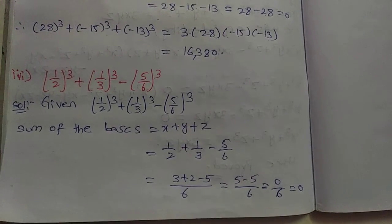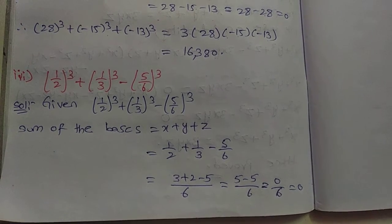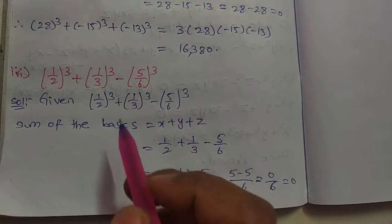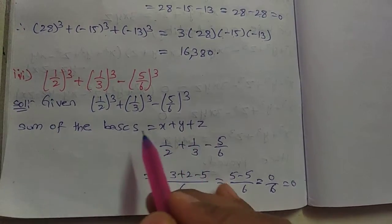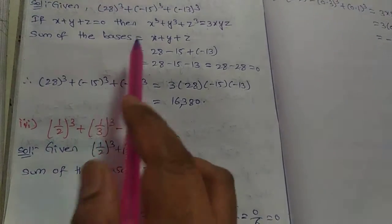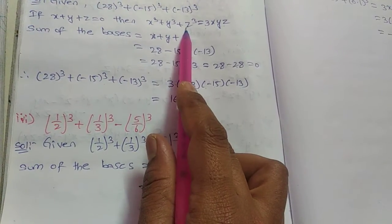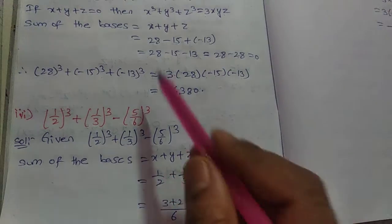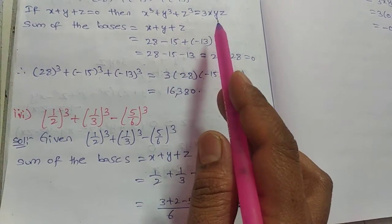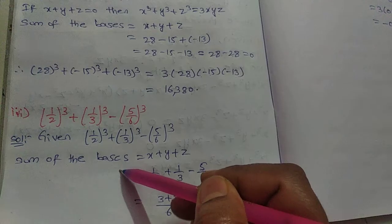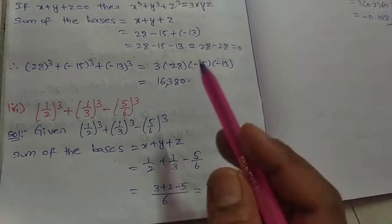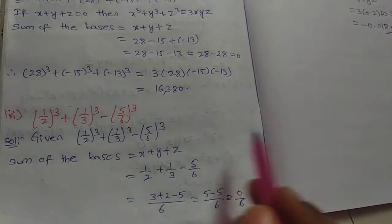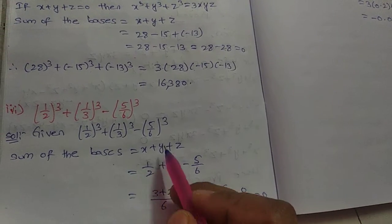Third one: (1/2)³ + (1/3)³ + (-5/6)³. Fractions follow the same process. The identity is: if x + y + z = 0, then x³ + y³ + z³ = 3xyz. In the sum of the bases, I'll verify this in the next two problems by copying the approach.